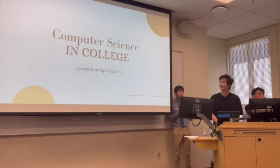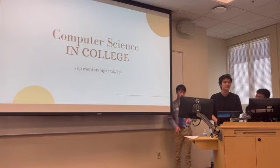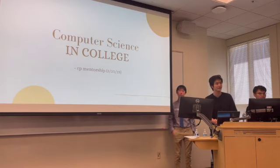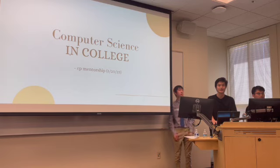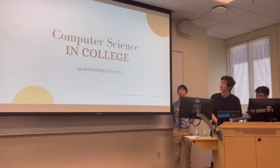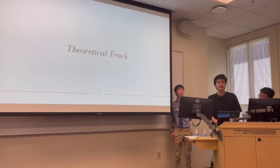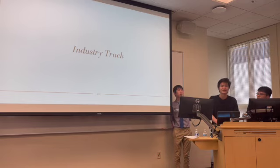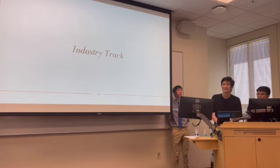I'm going to be talking about that and what it looks like in college. When you get to college, there are really two different tracks you can go down for computer science. In high school you're probably learning Java, AP computer science, writing some algorithms, sorting — all that stuff. Computer science gets a lot more complicated really really fast. There's a theoretical track and an industry track.